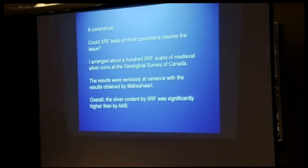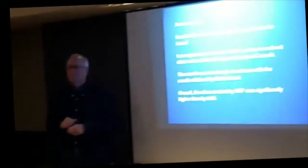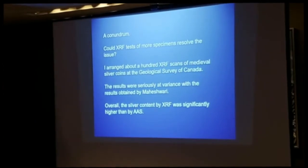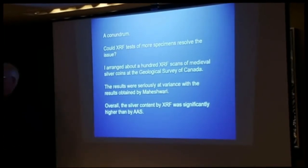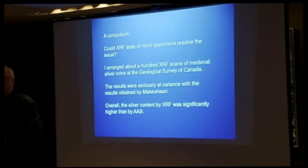Looking at the series and trying to determine how accurate this typology is, I wondered: can we do more specimens? Can we zero in on areas using XRF? X-ray fluorescence is a very emerging and available tool - even jewelers are using it around the world. It's simply a surface scan. I got about 100 coins tested by XRF at the Geological Survey of Canada, where I had a friend, Dr. Roger Pollan, who is a numismatist. What I found was that for all identifiable types, the results I was getting by XRF were seriously at variance with the figures published by Maheshwari - in general, XRF gave results significantly higher than the AAS.